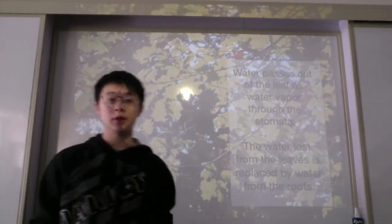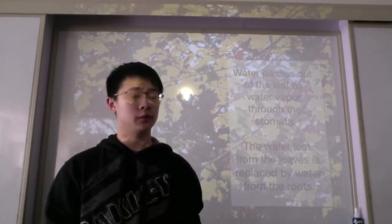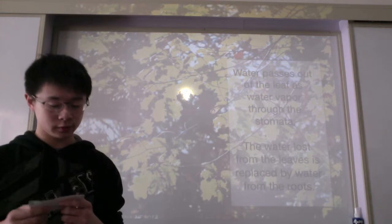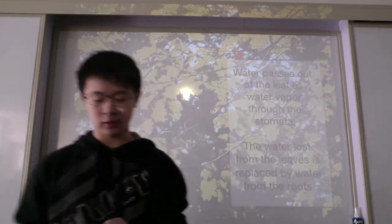Water passes out of the leaf as water vapor through the stomata. The water loss from the leaves is replaced by water absorbed from the roots. Water is brought up from the roots through the stem by the xylem tube.